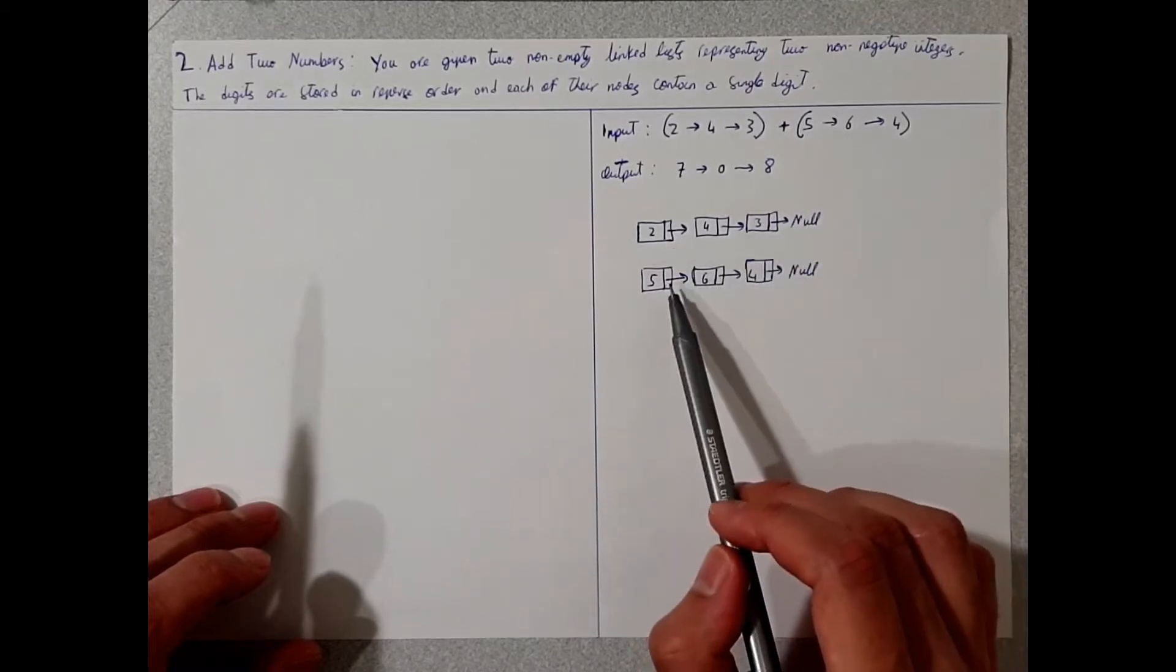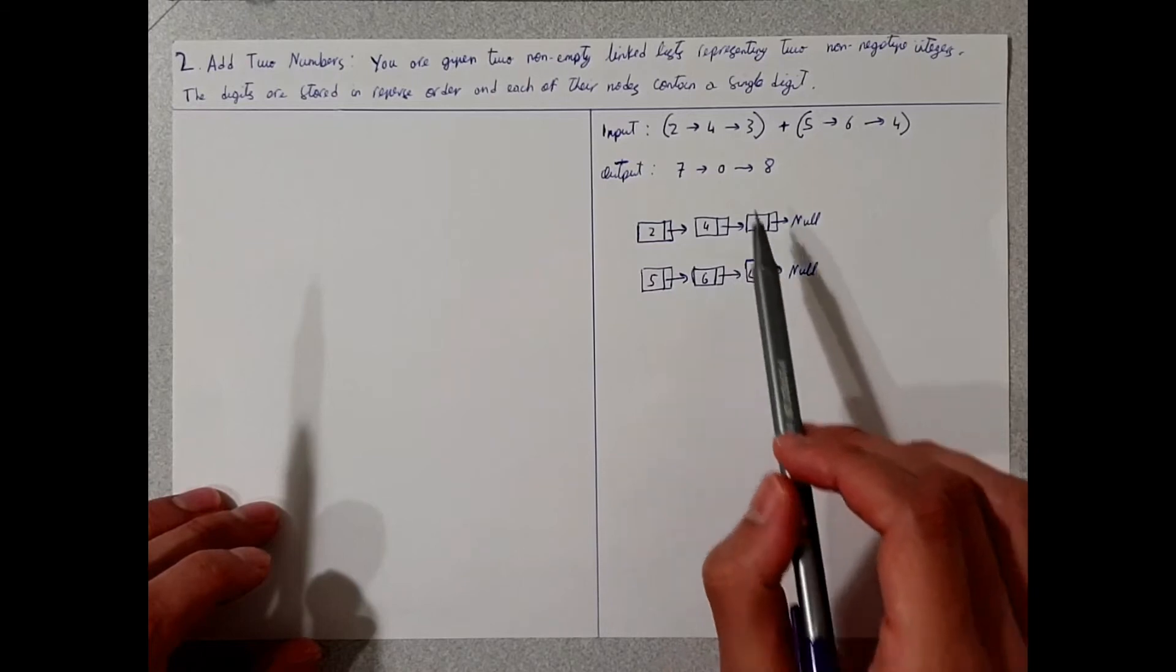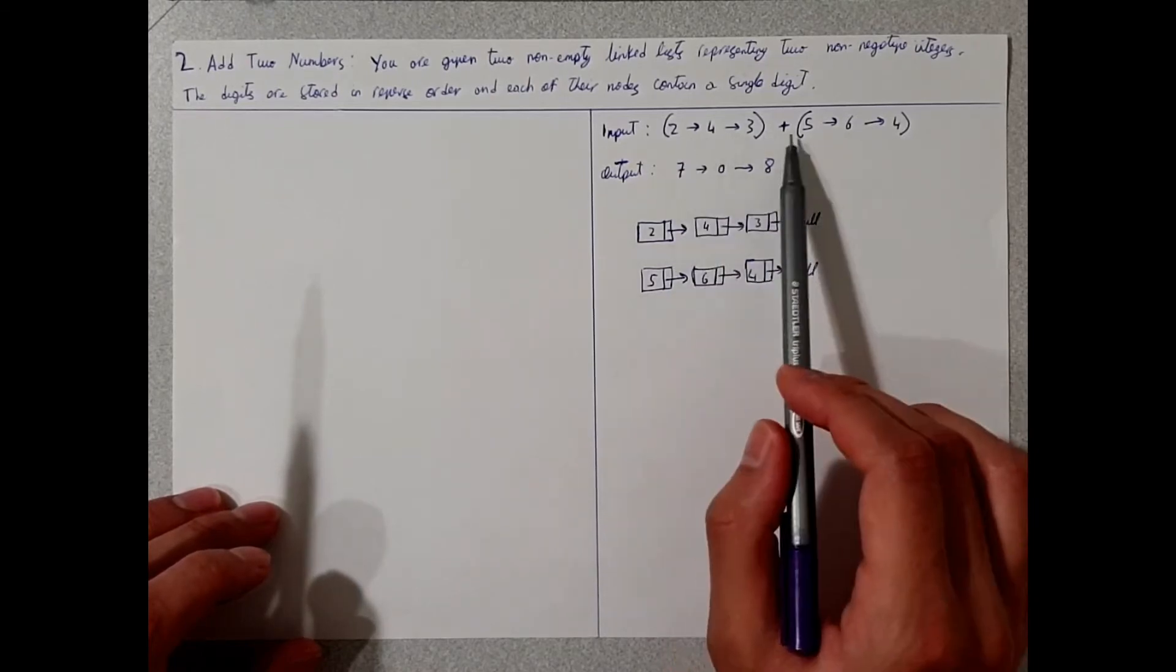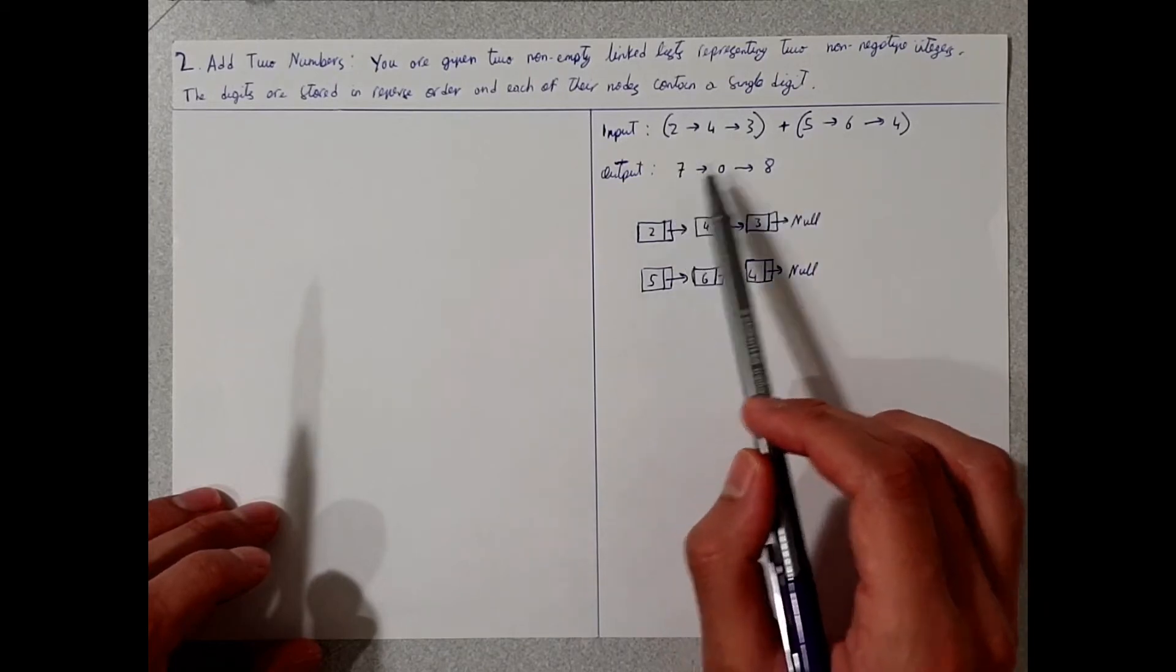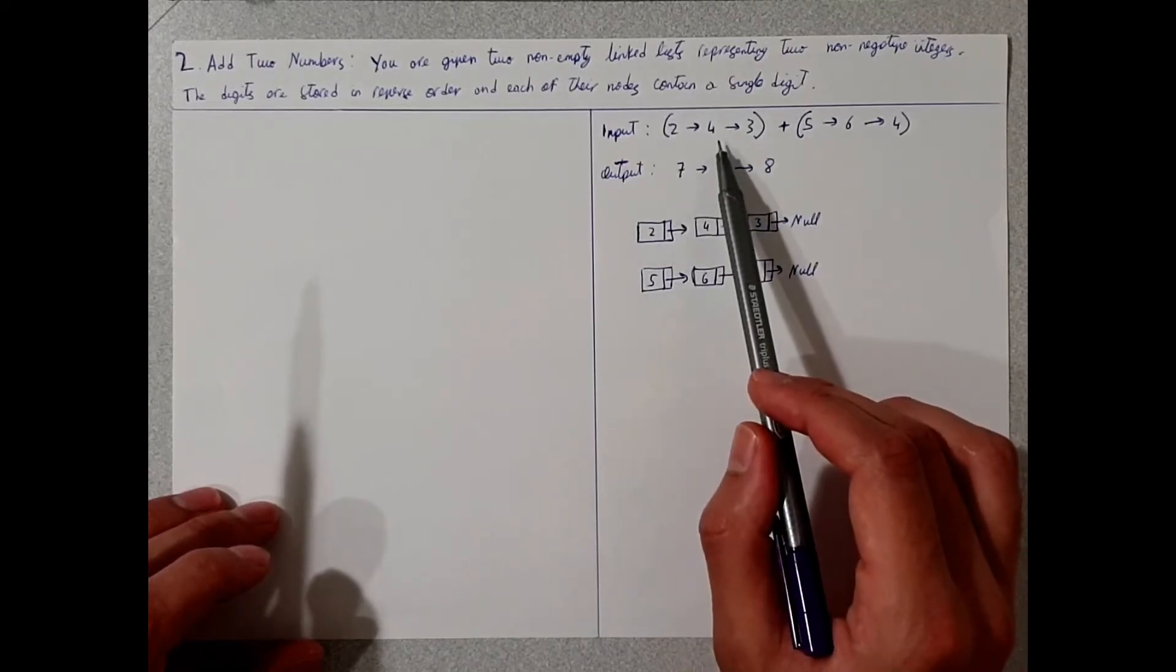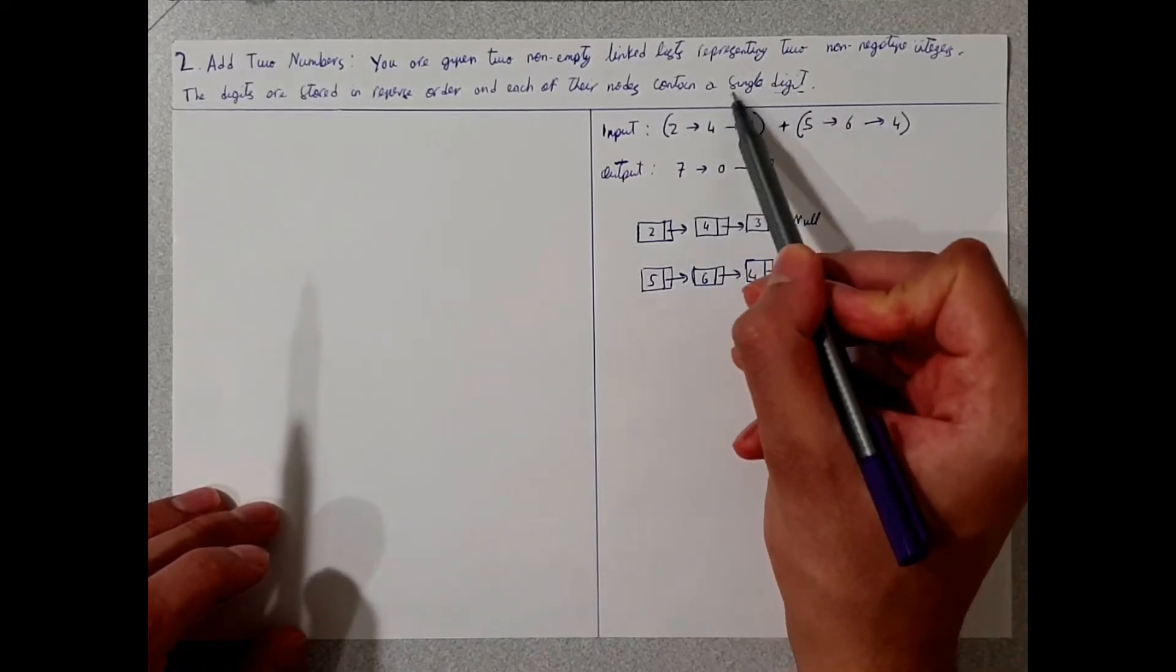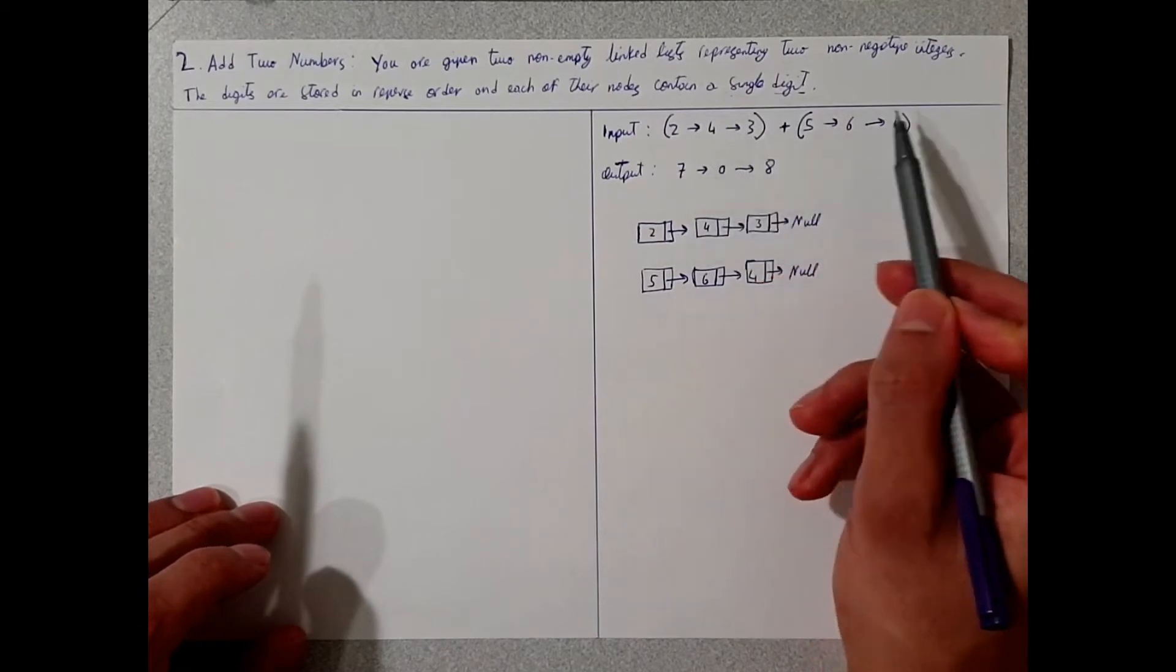I've drawn them here so you can see the presentation. The output of these is 708, which is basically 5 plus 2 gives you 7, 6 plus 4 gives you 10, but since it says they can only hold a single digit, the zero remains and the one